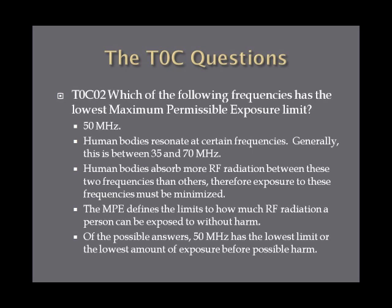Which of the following frequencies has the lowest maximum permissible exposure limit? The answer is 50 megahertz, and here's why. Just like antennas, human bodies can resonate at certain frequencies, and for the average human, this is usually between 35 and 70 megahertz. Human bodies will absorb more RF radiation between these two frequencies than others, and therefore exposure to frequencies between 35 and 70 megahertz must be minimized — thus where the 50 megahertz answer falls into play.